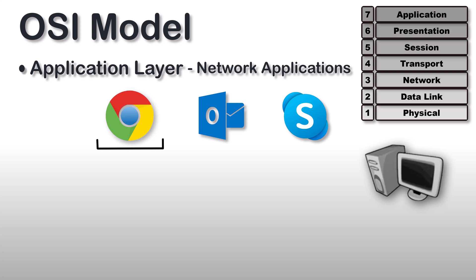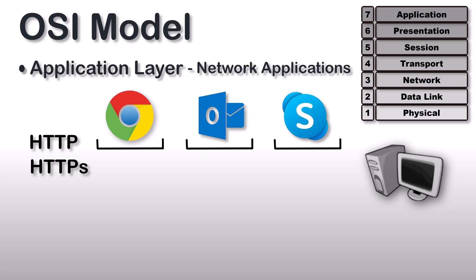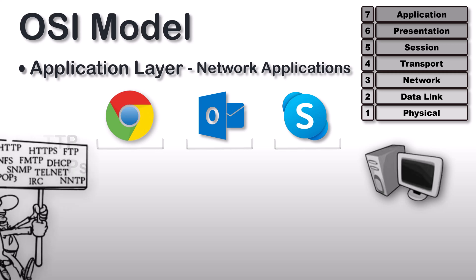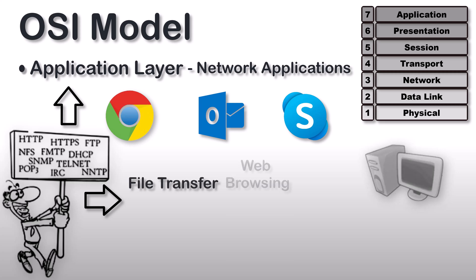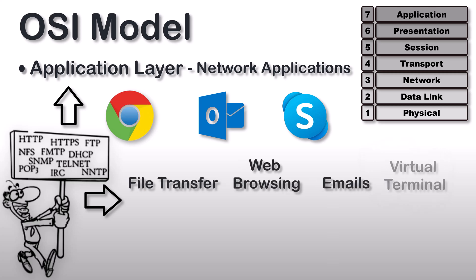The application layer uses network application protocols like HTTP or HTTPS to do internet browsing. Not only web browsers, but all other network applications like Outlook and Skype use different types of network application protocols to perform their tasks. There are dozens of application protocols that do various functions on this layer, collectively forming the application layer and enabling network activities like file transfer, web browsing, and email.